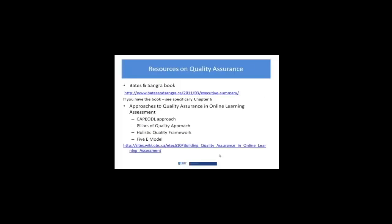In terms of resources, I've got two here in addition to the one from the Commonwealth of Learning that's in your course outline. The Bates and Sangra book — this particular link goes directly to their executive summary, and they have an entire chapter. If you have the book, I would encourage you to look at chapter 6, which is all on Quality Assurance. The executive summary does a nice job of truncating what would be relevant and meaningful for you to focus on.